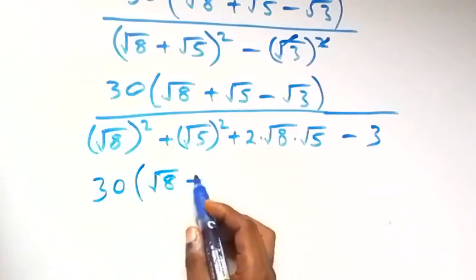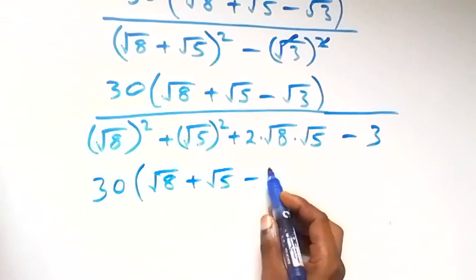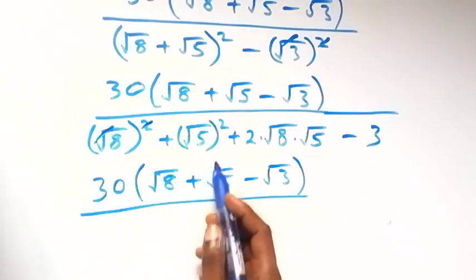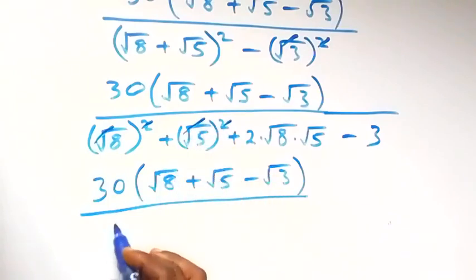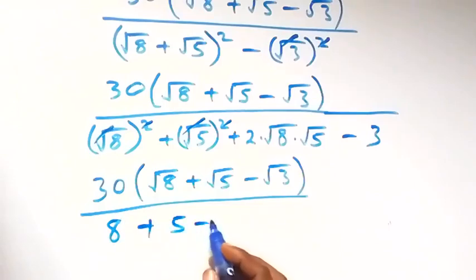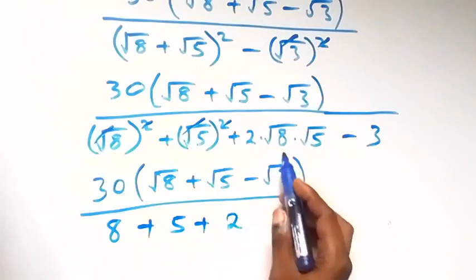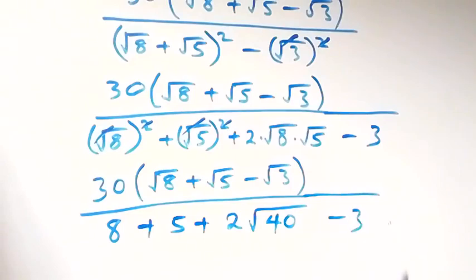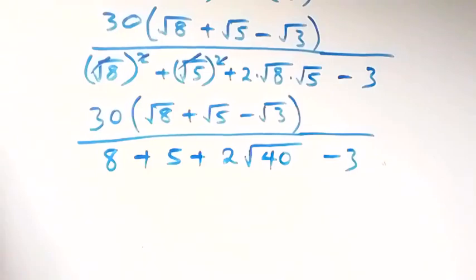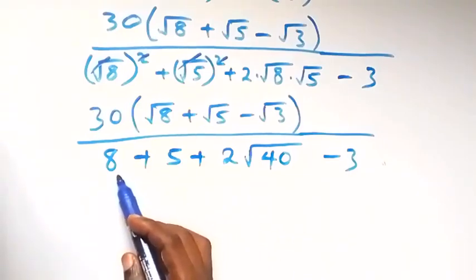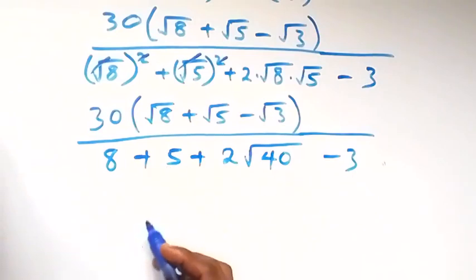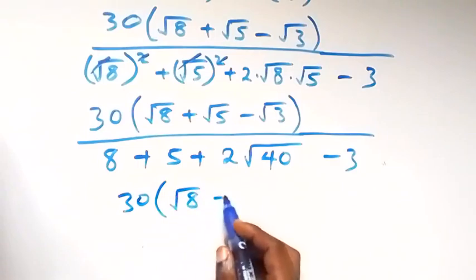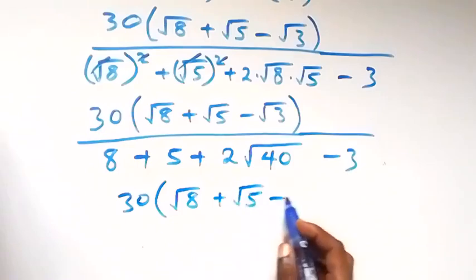We have 30 into bracket root 8 plus root 5 minus root 3, divided by what we have here. The square cancels the square roots: we have 8 plus 5, then plus 2 root 8 times 5 — that's 2 root 40 — then minus 3. Here we have 8 plus 5 minus 3, that's 10, so we still have 30 into bracket root 8 plus root 5 minus root 3.